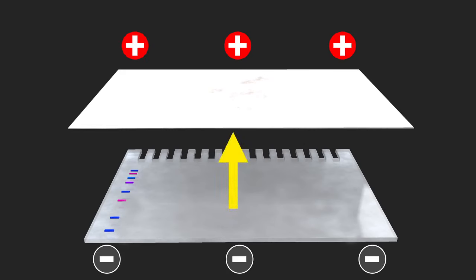The transfer method most commonly used in Western blotting is electroelution, where an electric field is applied to the gel to facilitate the migration of proteins out of the gel and onto a piece of membrane.